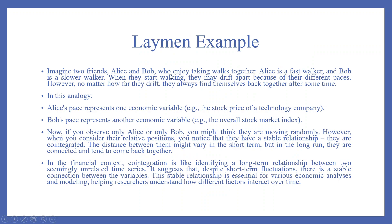Let us take another layman example. Imagine two friends, Alice and Bob, who enjoy talking and walking together. Alice is a fast walker and Bob is a slower walker. When they start walking, they may drift apart because of their different paces. However, no matter how far they drift, they always find themselves back together after some time. In this analogy, Alice's pace represents one economic variable — for example, the stock price of a technology company — and Bob's pace represents another economic variable, for example the overall stock market index. If you observe only Alice or only Bob, you might think they are moving randomly. However, when you consider their relative positions, you notice there is a stable relationship. They are co-integrated.